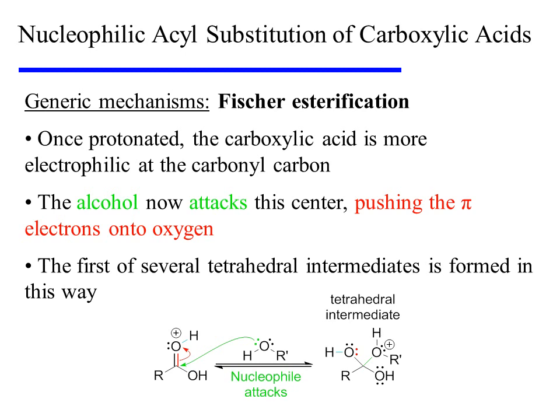Once it is protonated, the carboxylic acid is more electrophilic at the carbonyl carbon. Consequently, the alcohol now attacks this center and in the process pushes pi electrons onto the adjacent oxygen atom. The first of several tetrahedral intermediates is formed in this way.